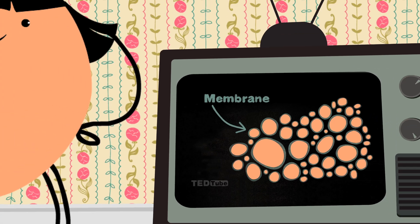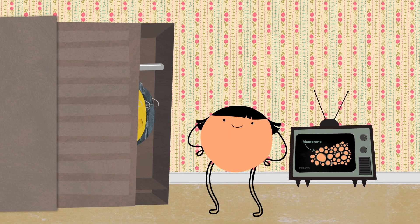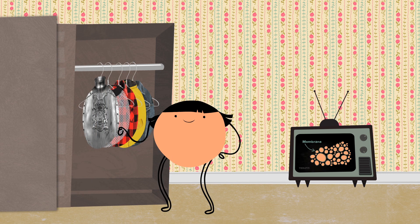A cell membrane must be both sturdy and flexible. Imagine a membrane made of metal, great at keeping the cell's guts inside, but horrible at letting materials flow in and out.